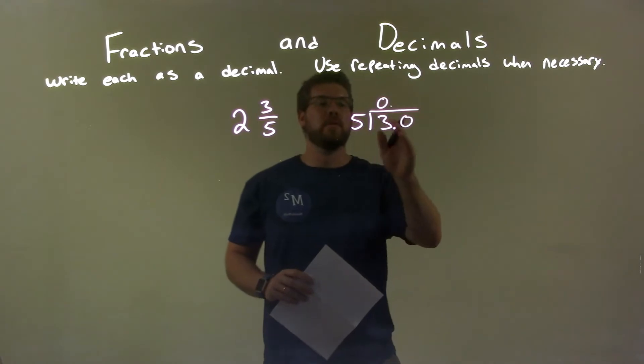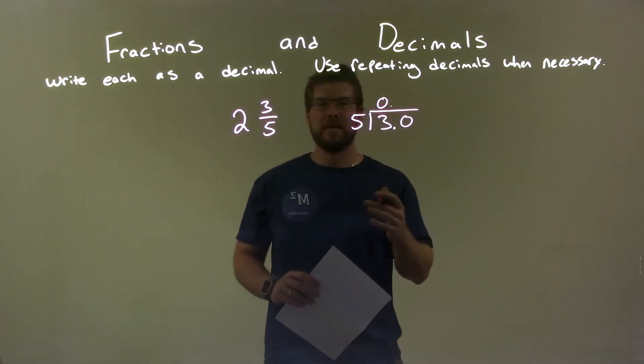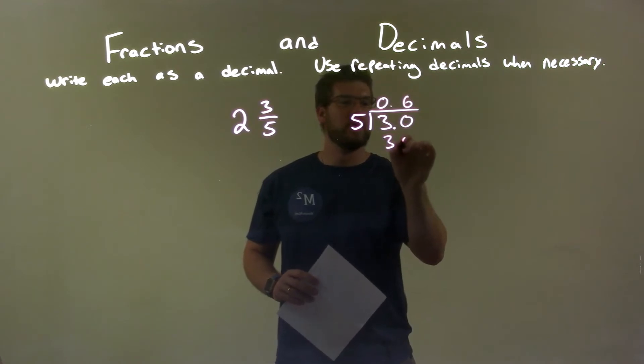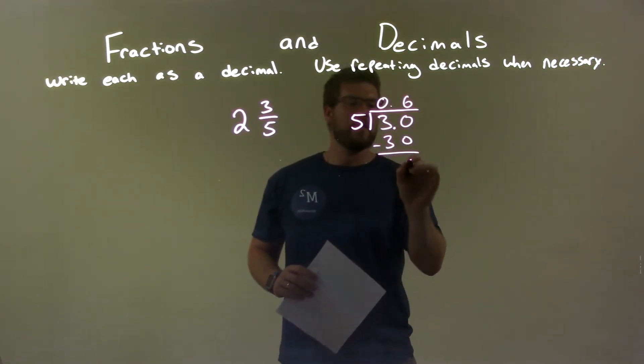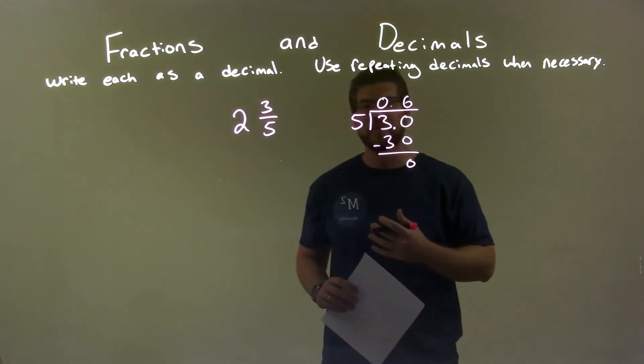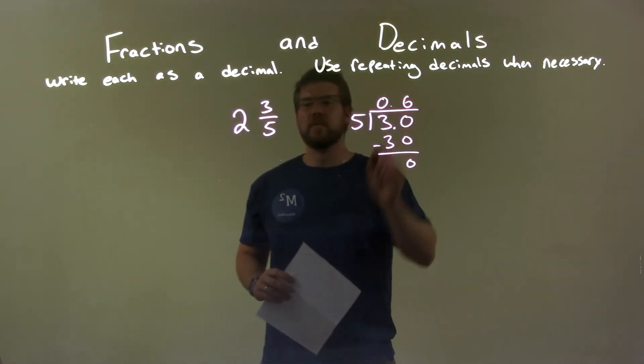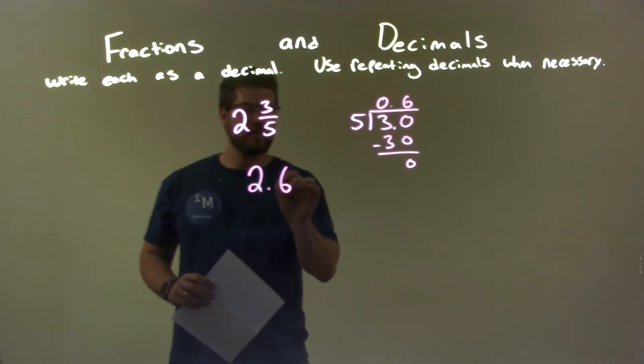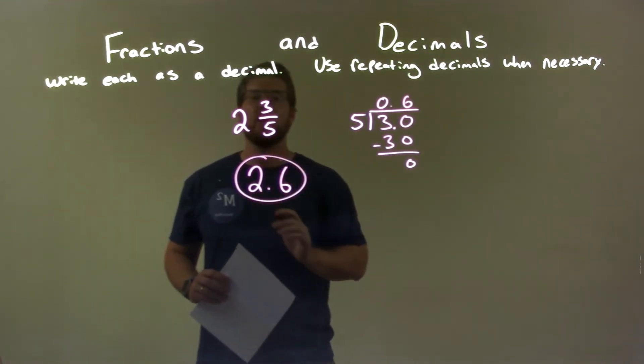So now 5 goes into 30. Well, 5 goes into 30 6 times. 6 times 5 is 30. We subtract them, we get a 0, and now we're done. So we have 0.6 and then don't forget that 2. So we have 2.6 together and that is our final answer.